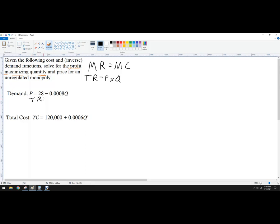So total revenue is going to be 28q minus 0.0008q squared.